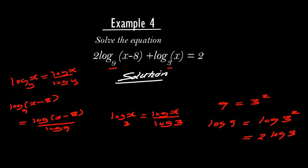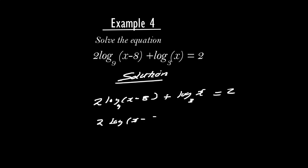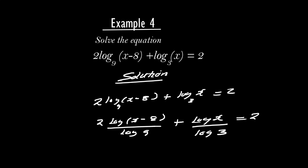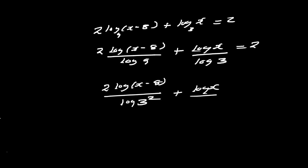So to solve the equation 2 log(x minus 8) to base 9 plus log x to base 3 equals 2, we write it as: log(x minus 8) over log 9, plus log x over log 3, equals 2. Since log 9 is log 3 squared, which equals 2 log 3, we substitute that in. The task here is to ensure that we have the same base throughout.